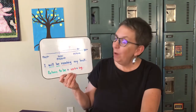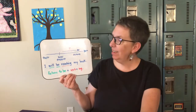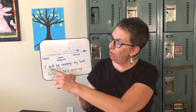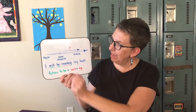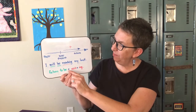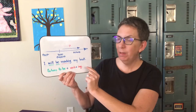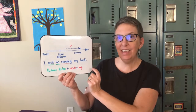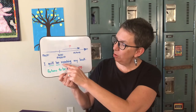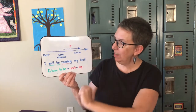The way that we form this tense is to use the words 'will be,' which is the future of 'to be,' plus the verb plus an -ing ending. So I have here the verb 'read' plus the -ing ending.